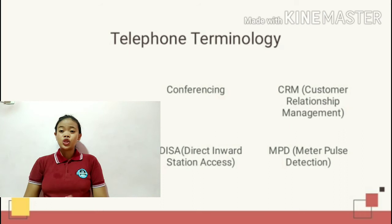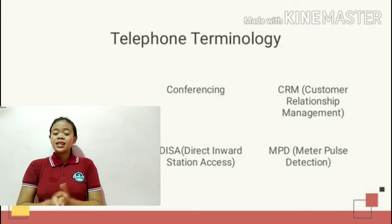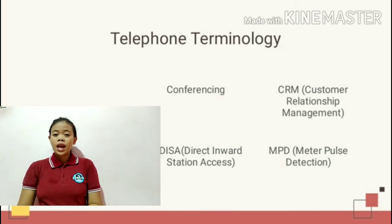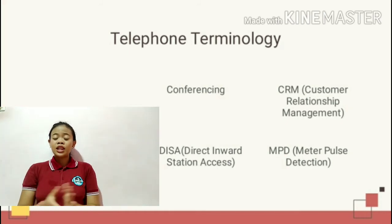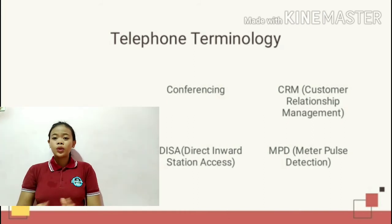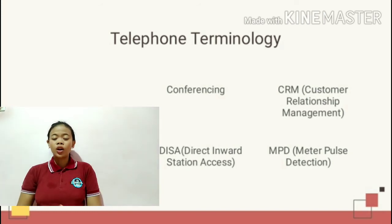CCU is the box or cabinet hosting the central equipment that controls the telephone system. The next is Conferencing — the joining together of more than two telephone users in a single call. The next is CRM, or Customer Relationship Management — a software application to deliver a single view of the customer. The next telephone terminology is DISA, or Direct Inward Station Access — it provides callers with single digit access to extensions or ring groups.